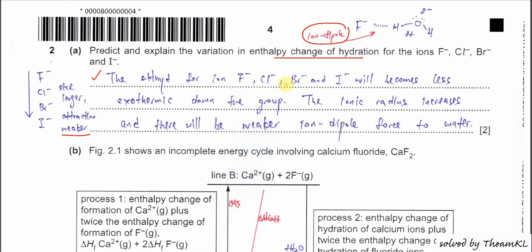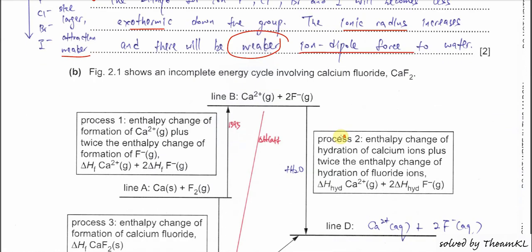Therefore, the enthalpy change of hydration for chloride, bromide, and iodide becomes less exothermic going down the group. Because the attraction is weaker, less energy is released when these ion-dipole bonds form. The only reason is that the ionic radius increases down the group, so ion-dipole forces to the water become weaker.